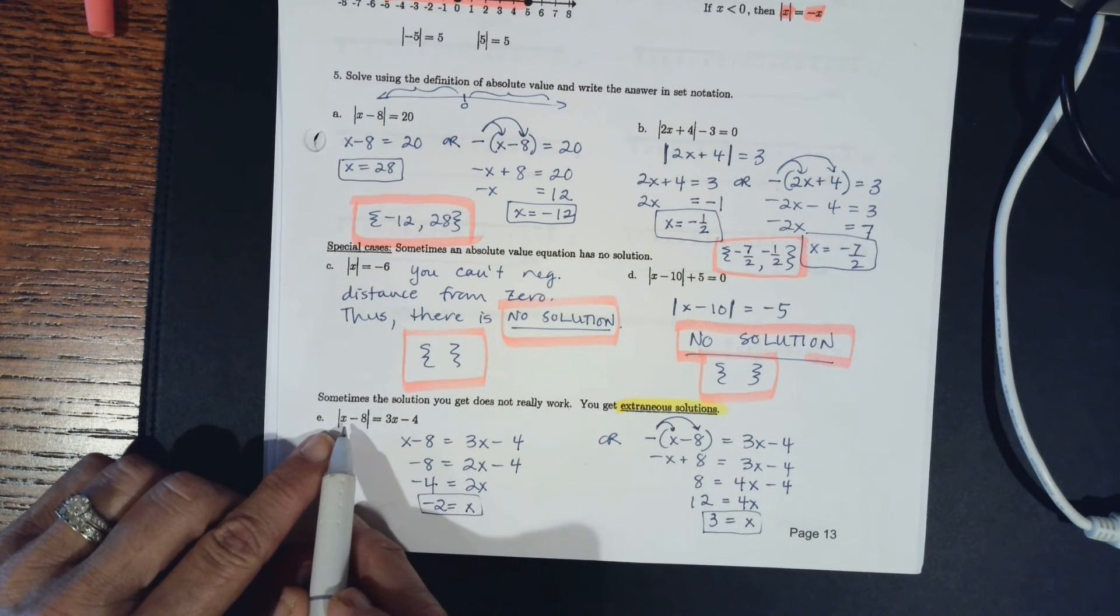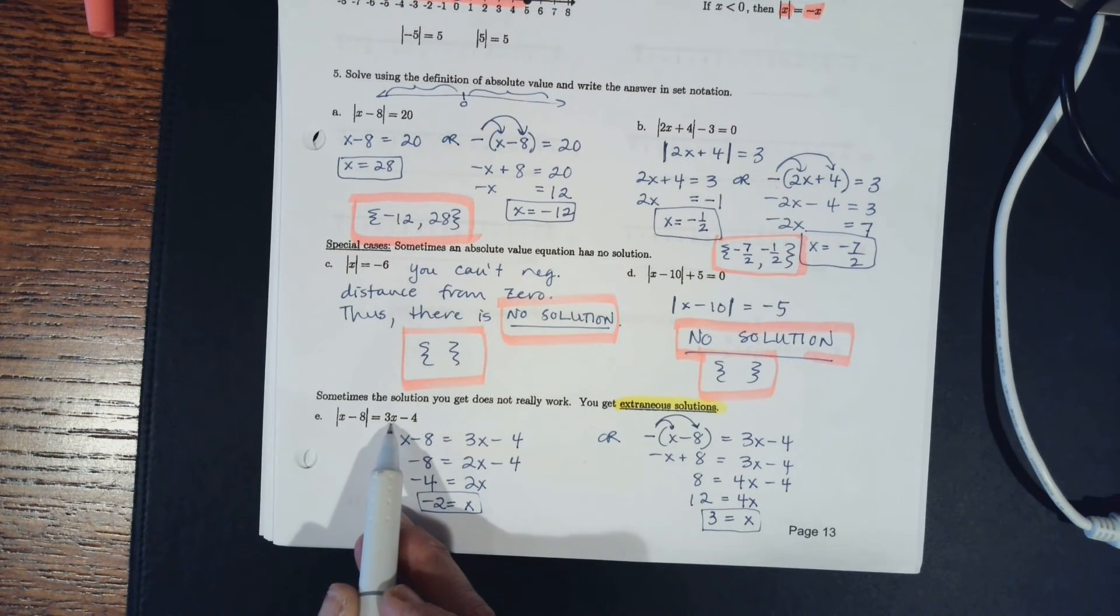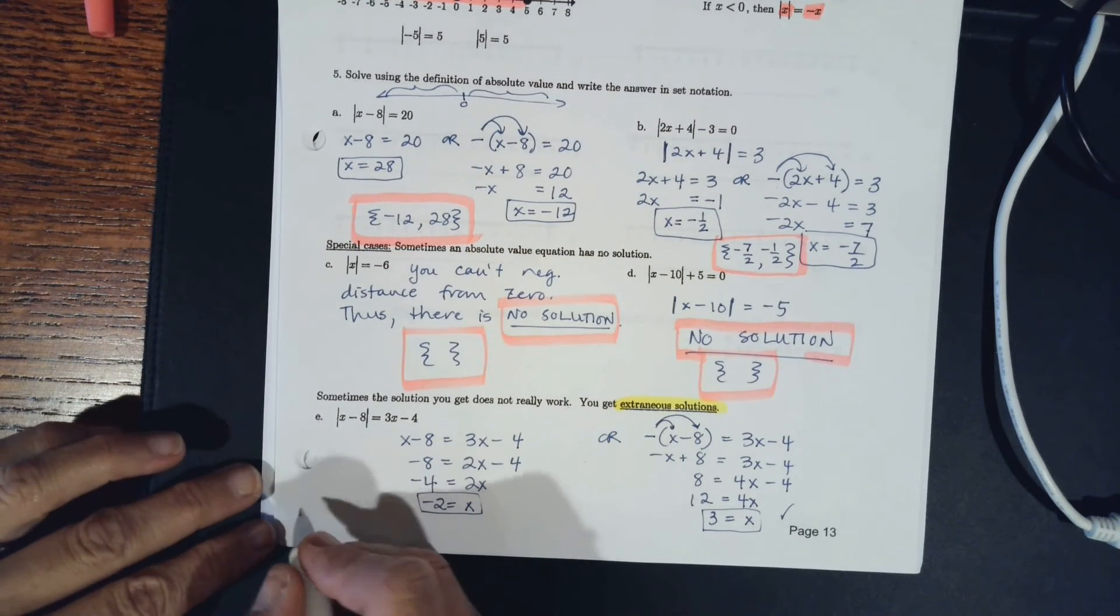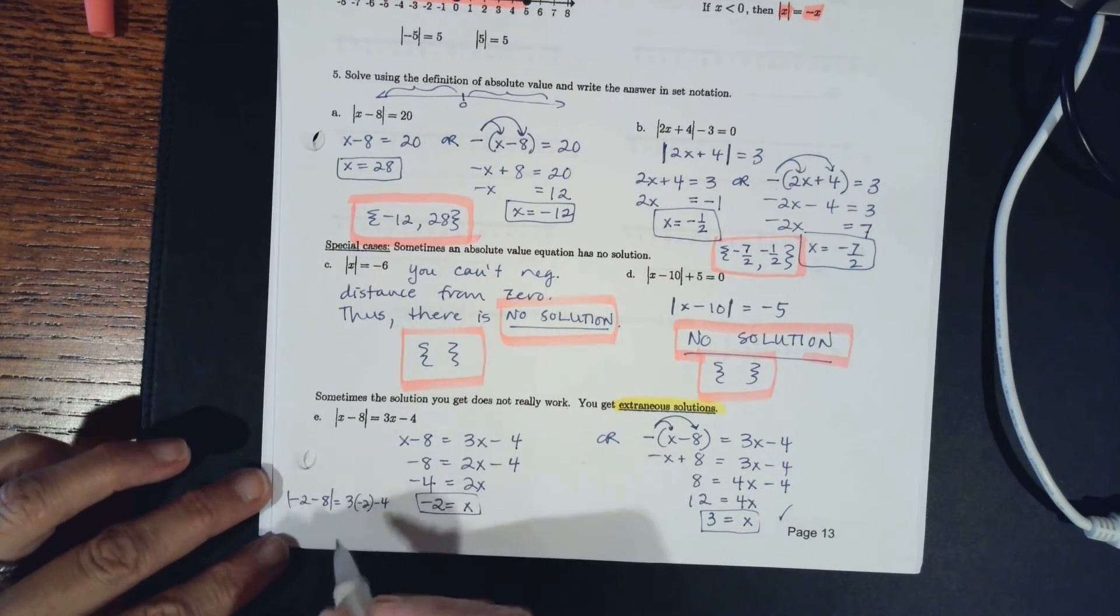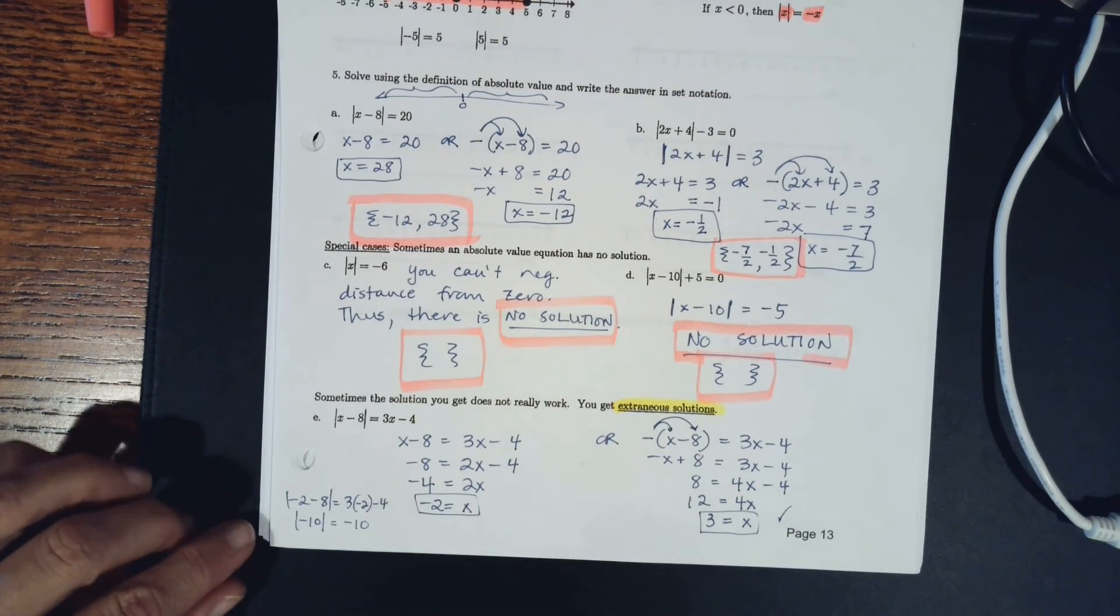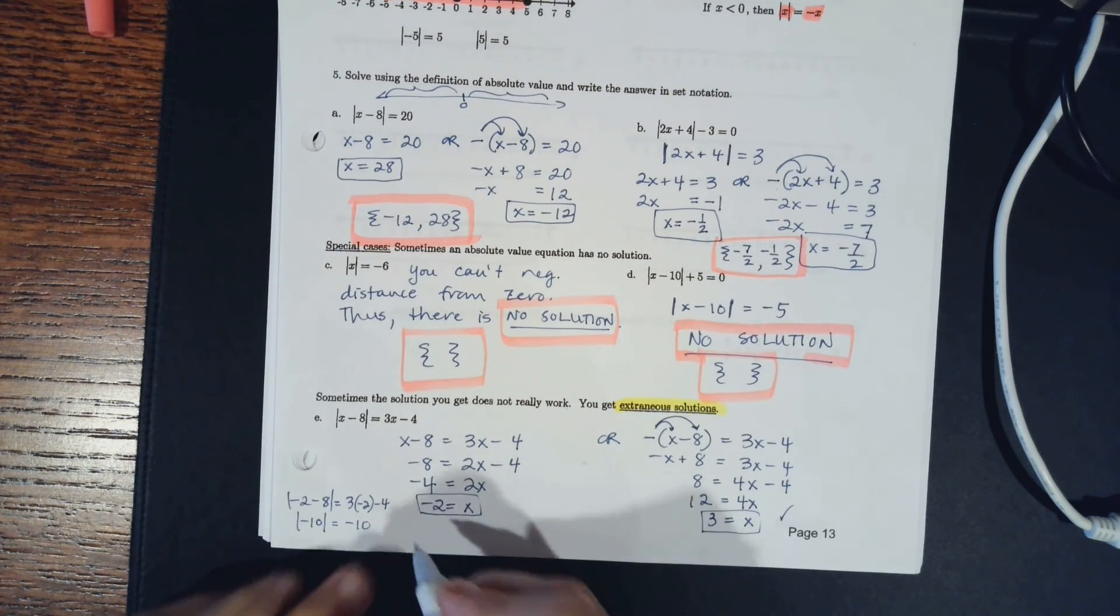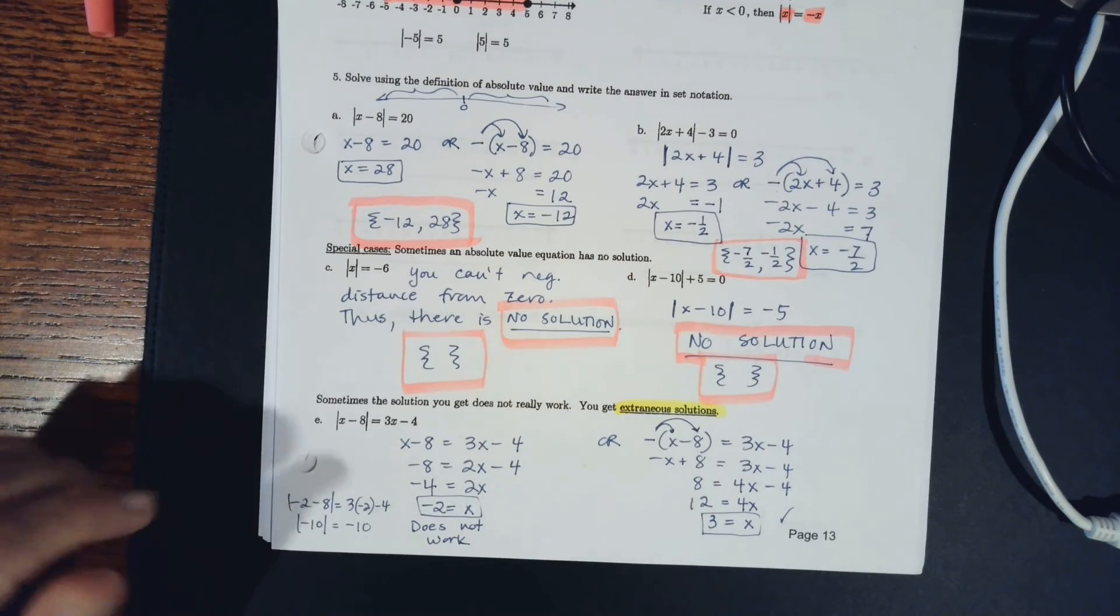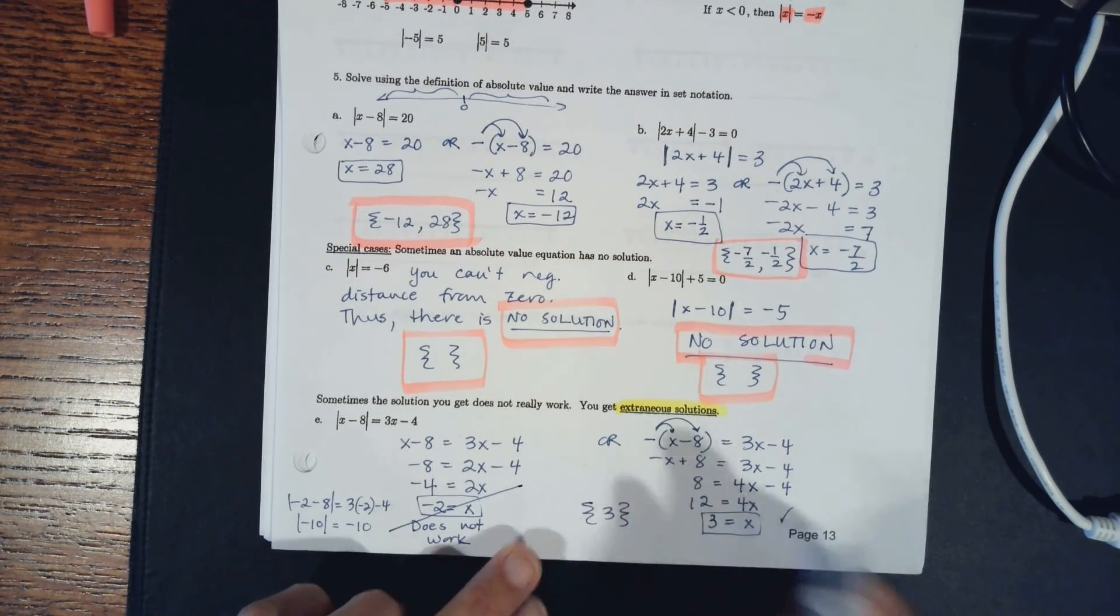If I take the 3 and put it in here, I get 3 minus 8, that's negative 5, which would be a positive 5. And then I put the 3 in there and I get 9 minus 4, so this one works. However, if you take negative 2 and you put it back in here, you get negative 2 minus 8 equals 3 times negative 2 minus 4. So this would be negative 10, and this would be negative 10 also. But the absolute value of negative 10 is not negative 10, it's positive 10, so this one does not work. It doesn't give you a true solution, so if it doesn't work, we just cross it out, and our only solution then is 3.